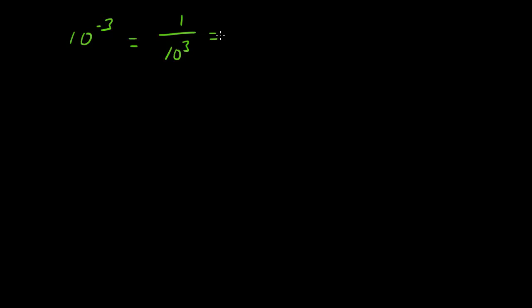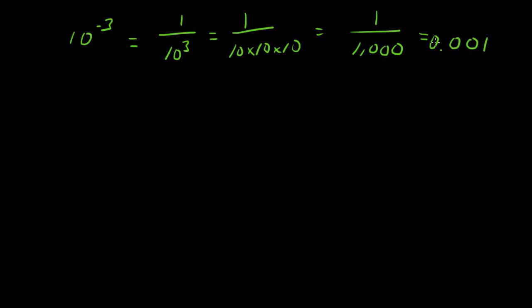Now let's get a little fancier and look at 10 to the minus third. The minus just means that it's 1 over 10 to the third, which is 1 over 10 times 10 times 10, which is 1 over 1,000. To get from 1.0 to where the decimal point normally is, we have to go 3 places — that's how we get the minus 3. So with positive exponents you move the decimal one way, and with negative exponents you move it the other way.